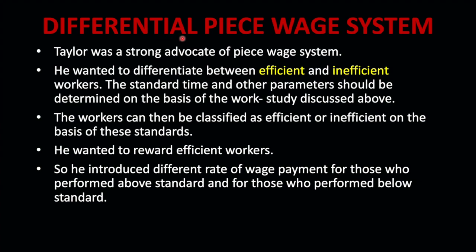In the differential piece wage system, when you have identified the efficient and inefficient worker, this is the technique which deals with how to treat them. The standard time and other parameters should be determined on the basis of work study — time study, motion study, and all this — which we have discussed before. Then the workers can be classified as inefficient and efficient on the basis of the standard which we have formulated.